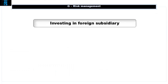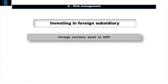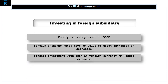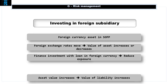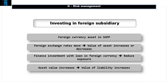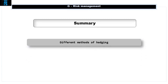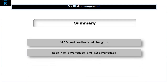Last but not least, something a little different. Suppose we invest in a foreign subsidiary — this means we will have a foreign currency asset on our statement of financial position. As foreign exchange rates move, the value of this asset will increase or decrease. If we finance this investment with a loan also denominated in that foreign currency, this will cushion our exposure: as the value of the asset increases, so will the value of the liability, and similarly for a decrease. In summary, there are many ways of reducing or eliminating foreign currency risk, each with its own advantages and disadvantages, and the treasury function will need to decide what's most appropriate in the circumstances.